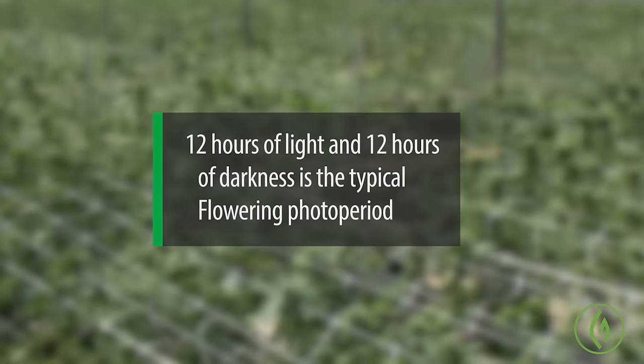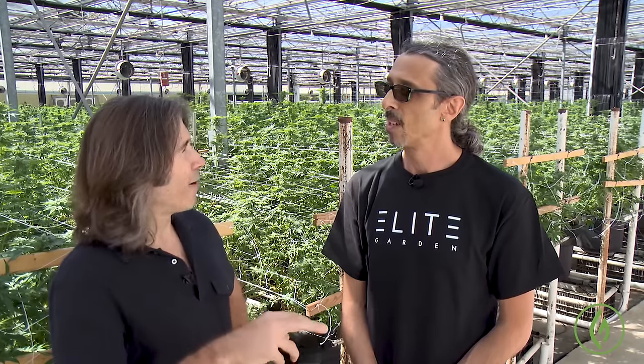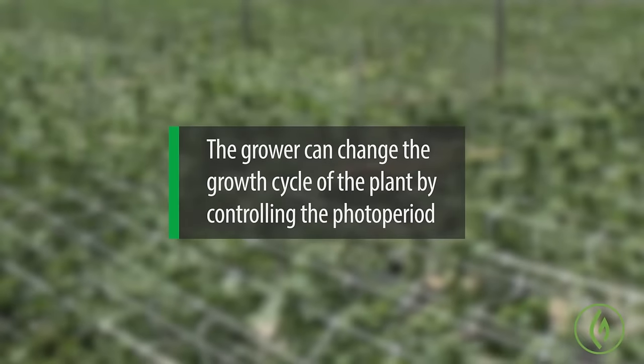Does it matter how long a plant has been in the veg cycle before it goes into flowering? Not in respect to triggering flowering — only in respect to the overall size of the plant and the overall finishing yield. You can veg a little longer if you want a larger plant and a larger yield, but it's not ultimately going to affect the time it takes to ripen. Regardless of how long the plant has been vegging, it can be put into the flowering stage at any point by manipulating the light cycle. So the grower actually gets to choose the size and yield of the finishing plant.